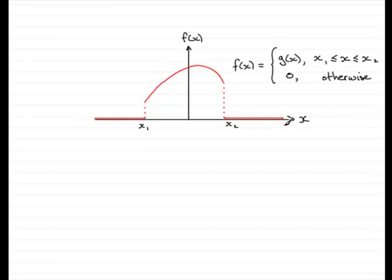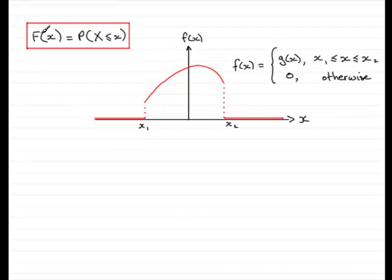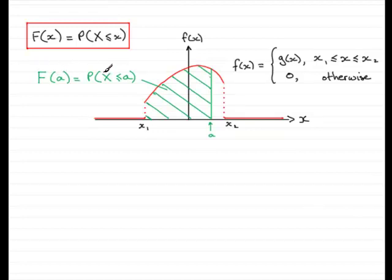What is the cumulative distribution function? The cumulative distribution function is called F of x — a capital F. It gives the probability of being less than or equal to a given observed value x. For instance, F of a is the probability of being less than or equal to an observed value a from the probability density function f of x. That probability is given by the shaded area. Probability that x is less than or equal to a is this particular area.